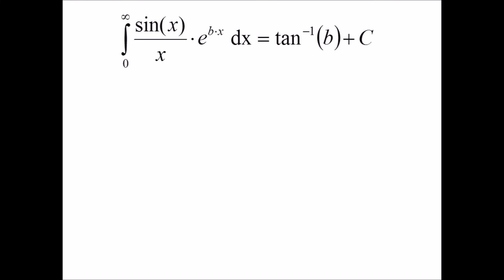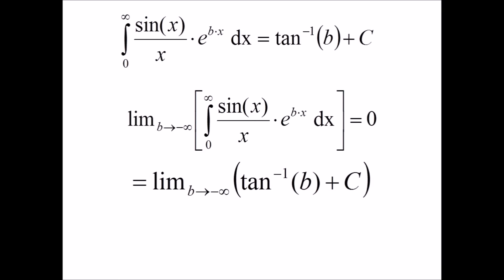Now that we have the integral, we need to find out what c is. Noting that we can apply the boundary condition, that as b goes to negative infinity, that the integral equals zero, since the exponential will become increasingly small as b decreases. We can solve for c by also taking a limit on the other side. The arctangent of b, as b goes to negative infinity, equals negative pi over 2. And this implies that c must equal pi over 2.